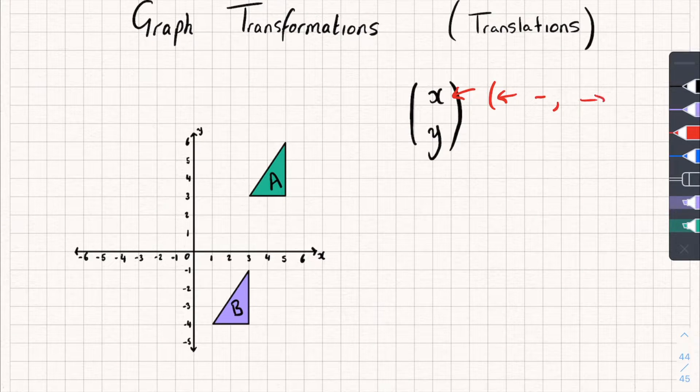Then if it's moved to the right, it's a positive number. So if the shape has moved two squares to the right, you'd just write two.